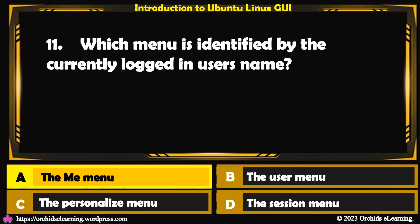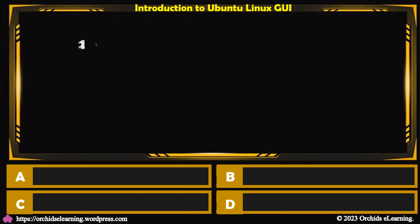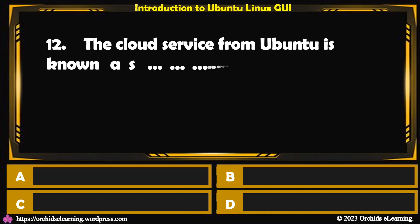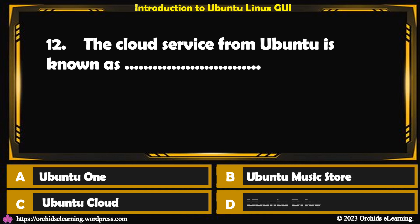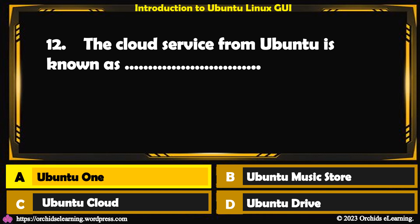Which menu is identified by the currently logged-in user's name? The answer is a. The Me Menu. The cloud service from Ubuntu is known as — the answer is a. Ubuntu One.